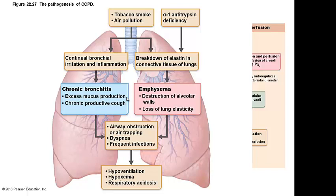This describes homeostatic imbalances of the respiratory system, and this number blows my mind. When you leave class today, I want you to Google how many patients in our country have COPD — chronic obstructive pulmonary diseases — things like asthma, emphysema, chronic bronchitis, and lung cancer. More than 80% of patients with COPD are smokers.